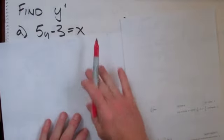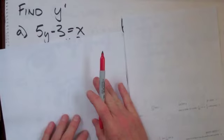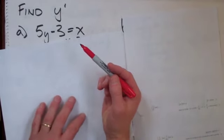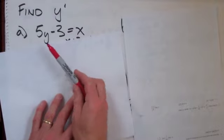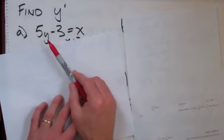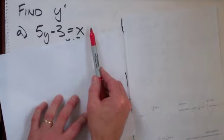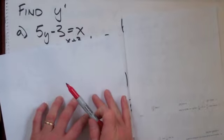We're asked to find the derivative, and you're going to be using the most appropriate technique, whether it's explicit or implicit technique. If you look at this, this is a simple linear equation. Y only appears once. It's easy to solve for Y. We add 3 to both sides and we divide by 5.